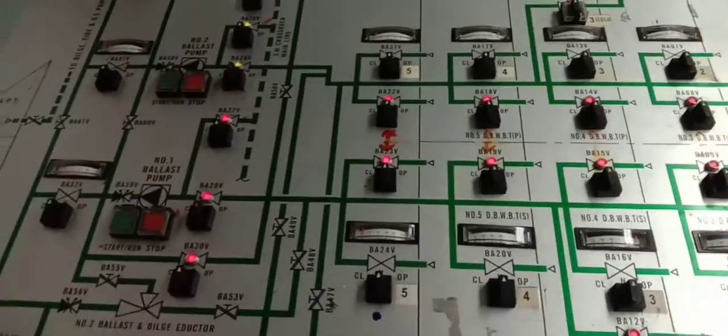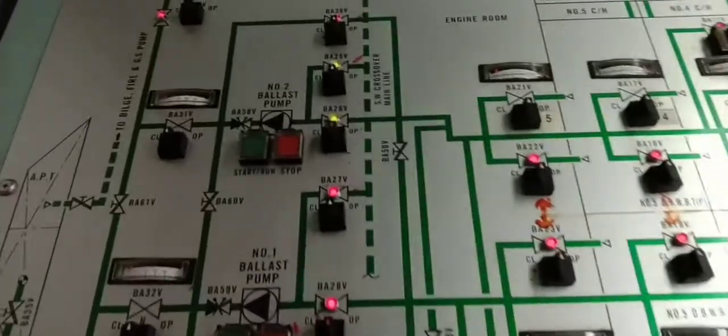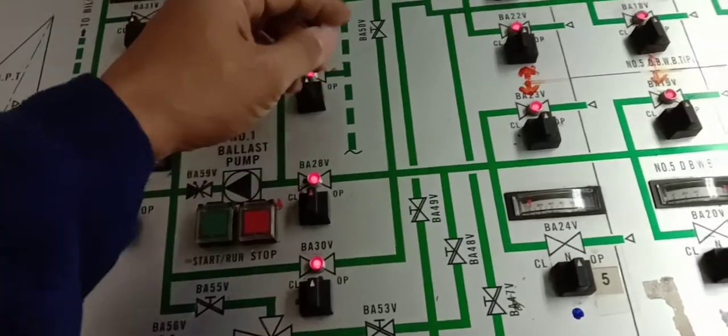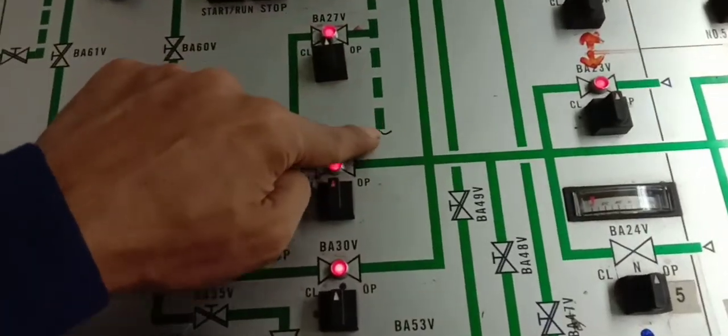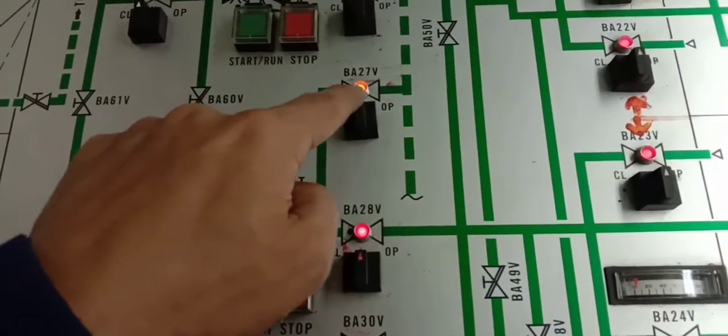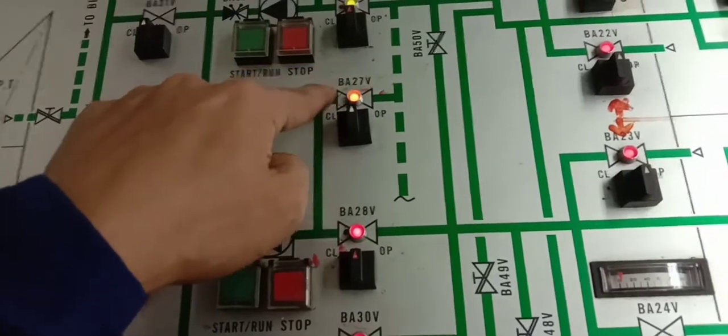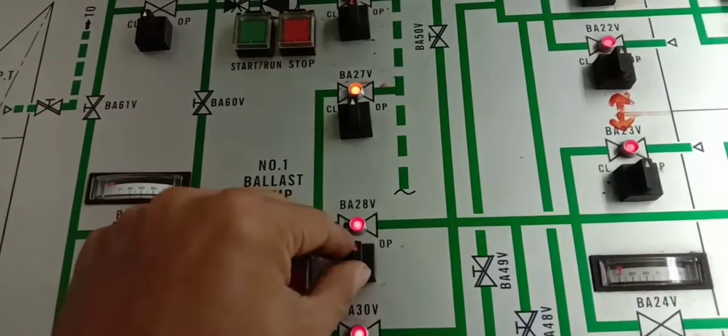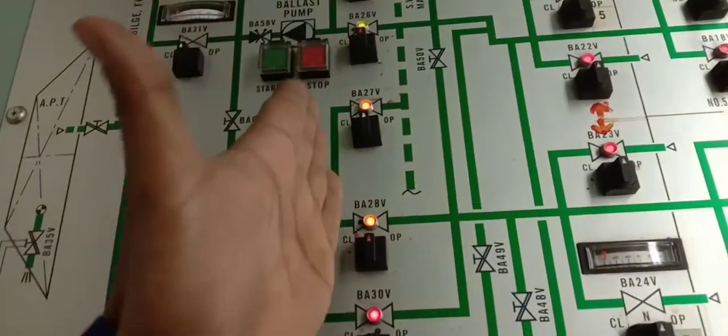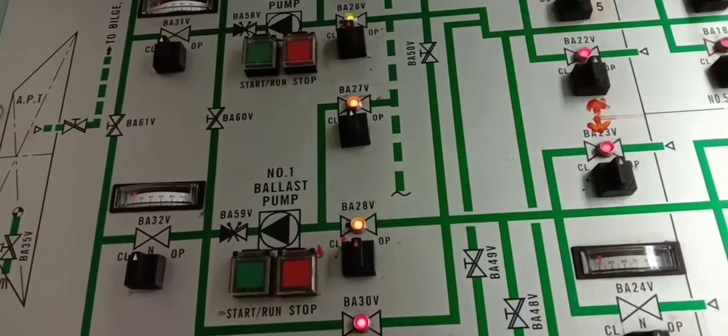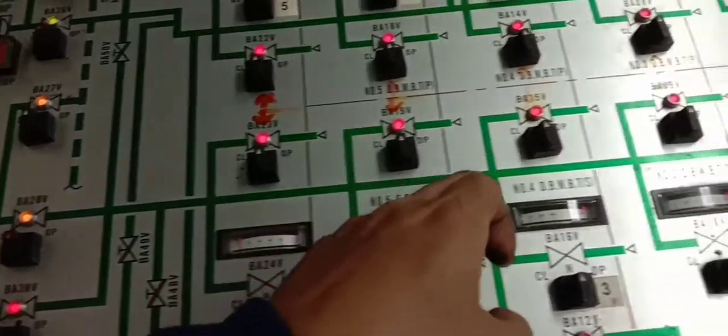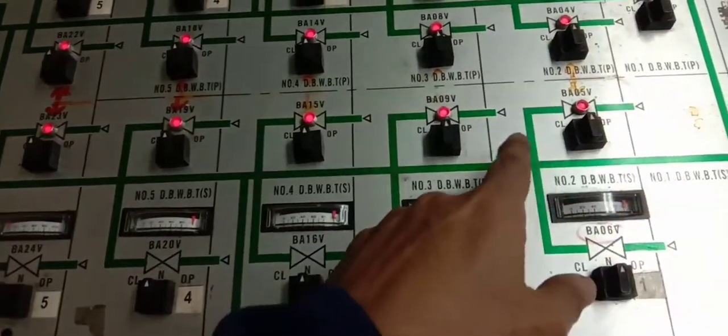Now let's proceed to the starboard side. This is the sea chest. We have to open this, just like that, until it turns green. Water will pass here. Also open B28, so BA27, 26, 25 are all open. Water will pass to the starboard side as well, and you can start filling up.